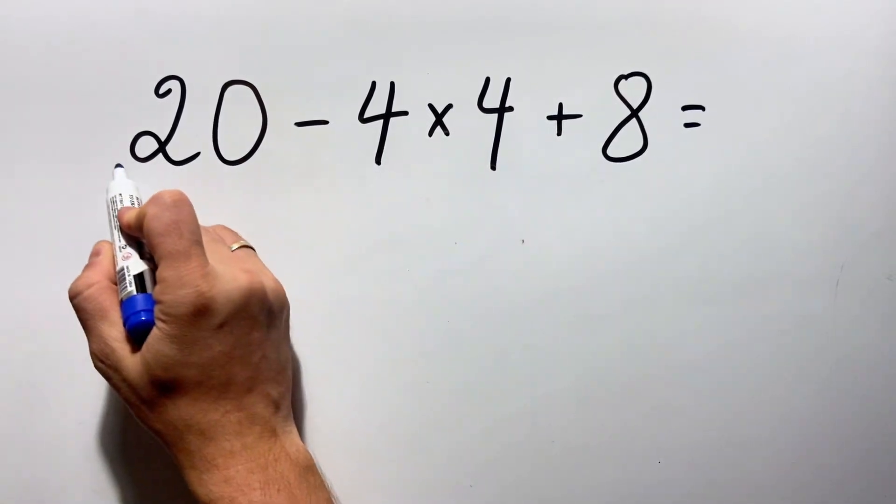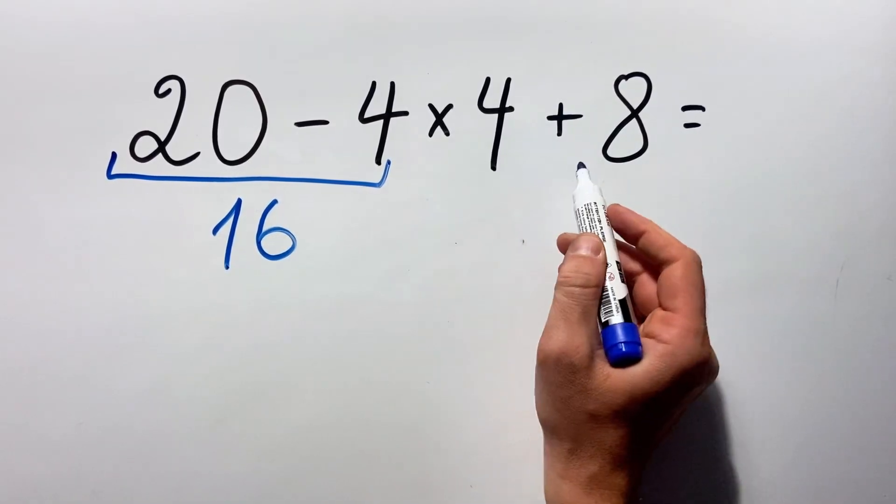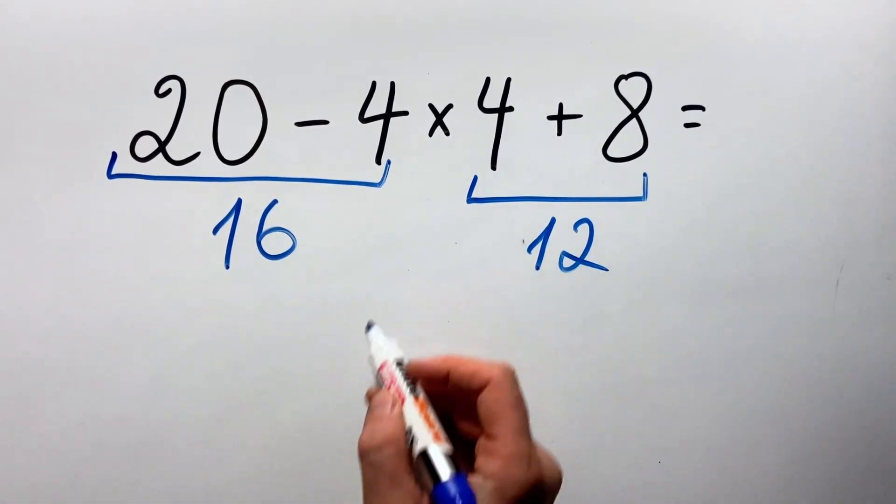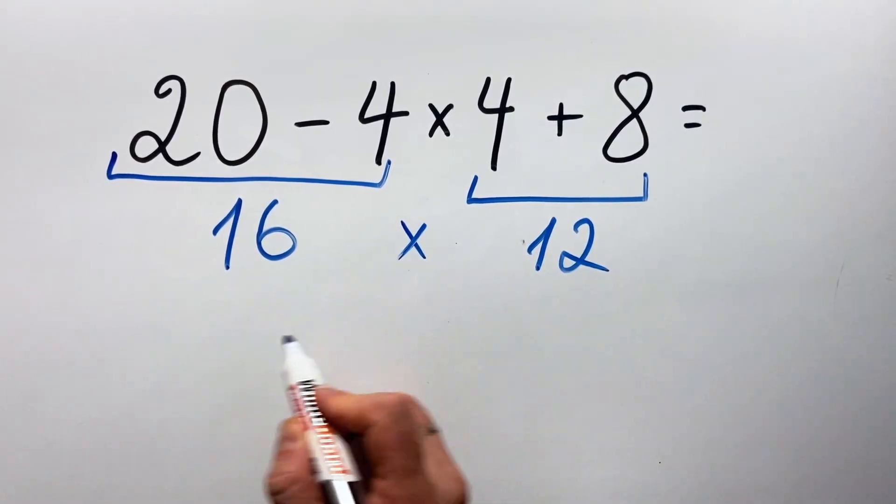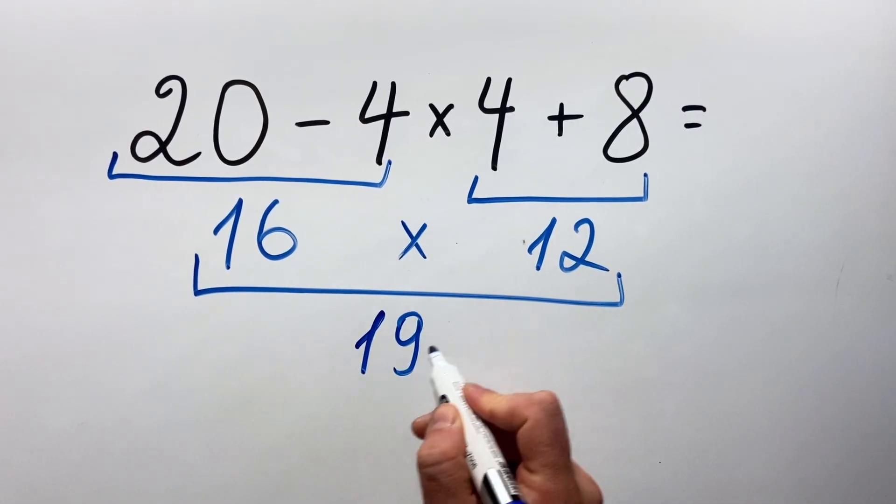20 minus 4 is 16, 4 plus 8 is 12, and 16 multiplied by 12 is 192.